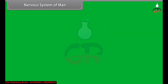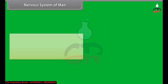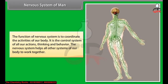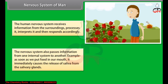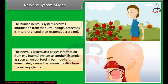The function of the nervous system is to coordinate the activities of our body. It is the control system of all our actions, thinking, and behavior. The nervous system helps all other systems of our body to work together. The human nervous system receives information from the surroundings, processes it, interprets it, and then responds accordingly. It also passes information from one internal system to another — for example, as soon as we put food in our mouth, it immediately causes the release of saliva from the salivary gland.